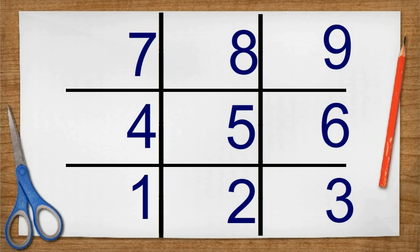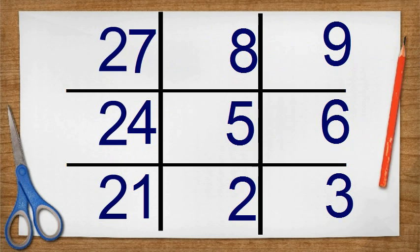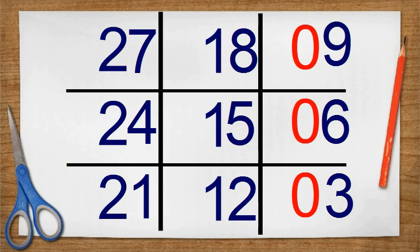Now onto the tens digit. 3's are easy. In the column on the left, all the tens digits are 2's. In the middle column, all the tens digits are 1's. In the last column, all the tens digits are 0's, but we don't need to show the 0's in the tens place, so let's get rid of them.